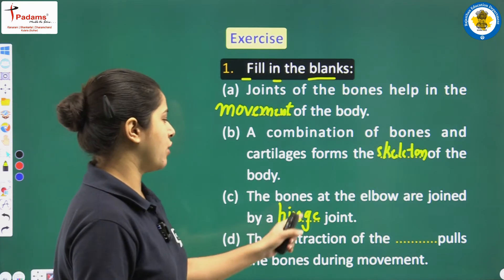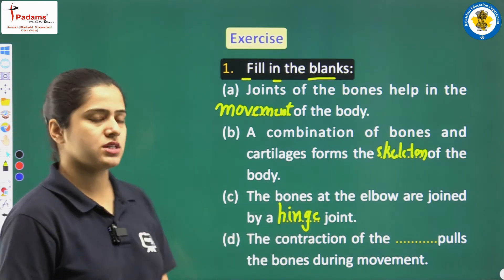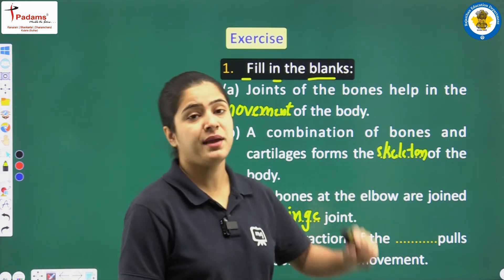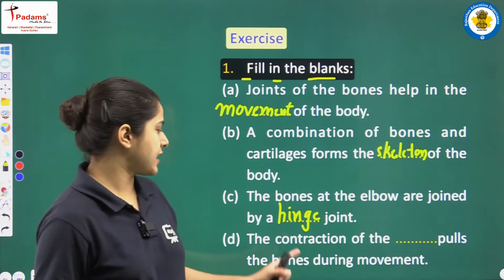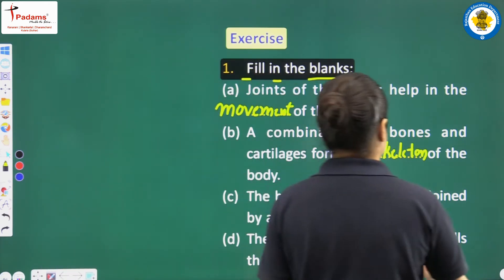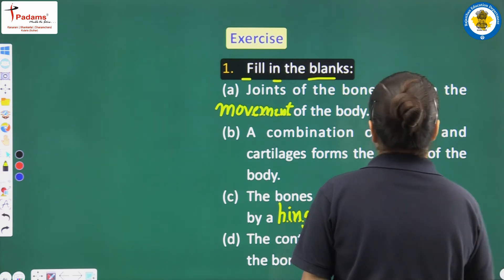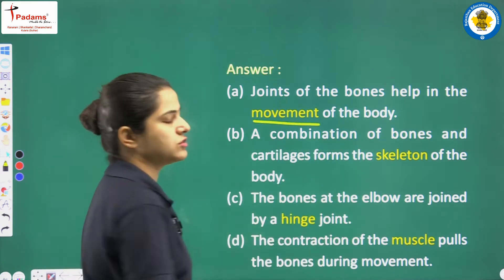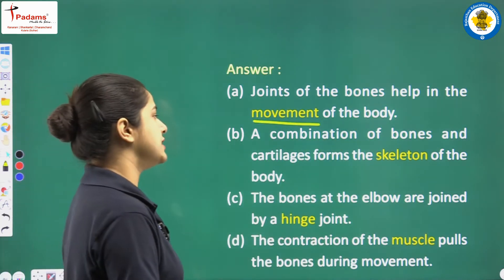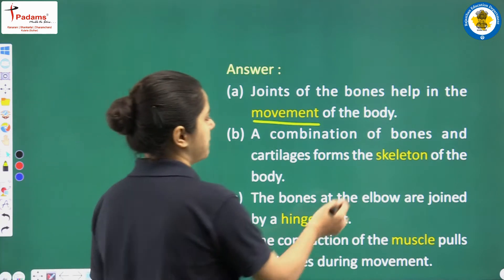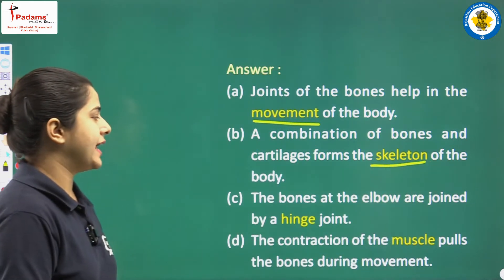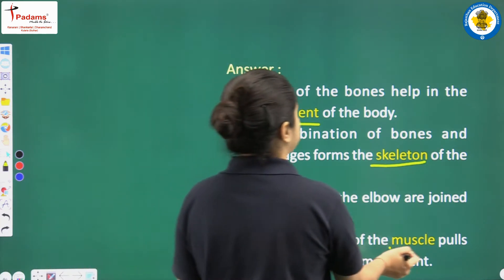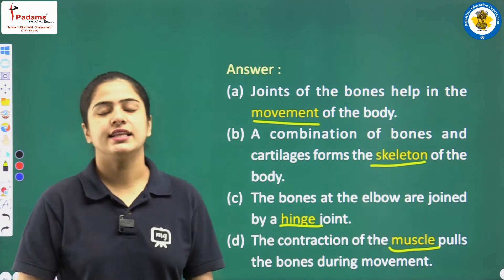The fourth part: the contraction of blank pulls the bones during movement. What thing, when it contracts, gives a pull to the bones and helps them move? That is muscle. So students, it is muscle. Quick recap: joints of the bones help in the movement of the body; a combination of bones and cartilage forms the skeleton; the bones at the elbow are joined by a hinge joint; the contraction of the muscle pulls the bones during movement.